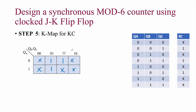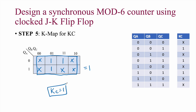For KC, when we group all eight terms — all 1s and don't-cares together — there is no variable that eliminates, so KC = 1.